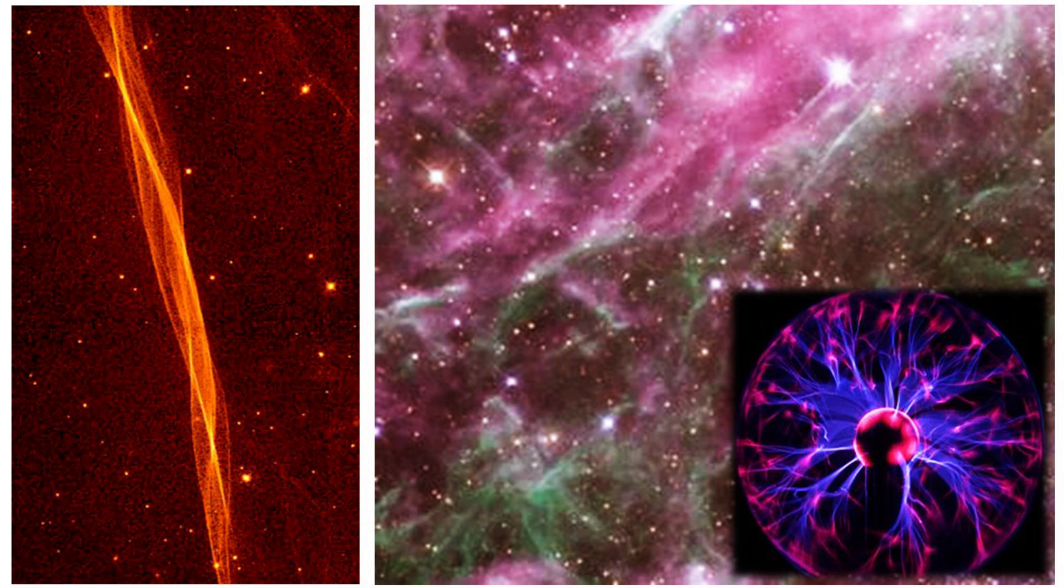This can be seen in examples ranging from nebulas out in space, like the Veil Nebula on the left, or the many-filamented Tarantula Nebula in the centre, or the plasma ball on Earth on the bottom right. These are relatively small-scale examples.